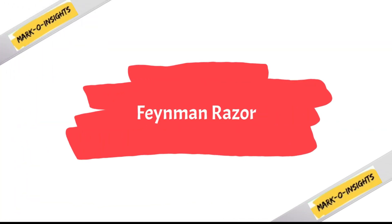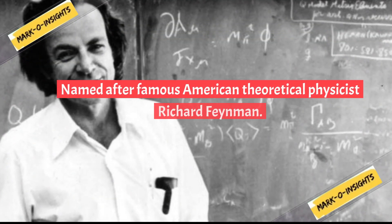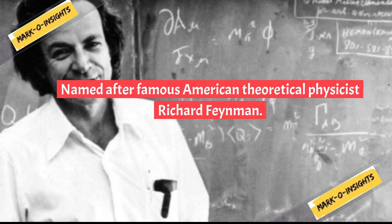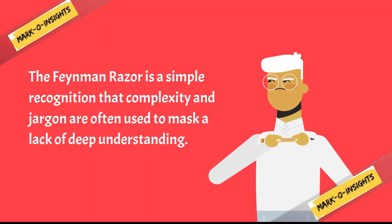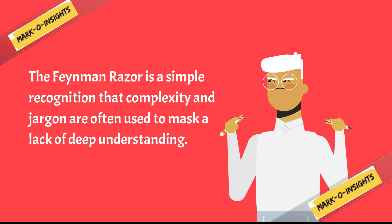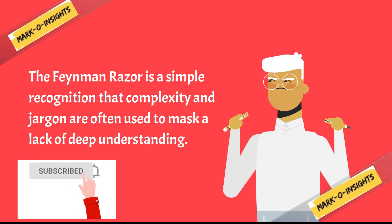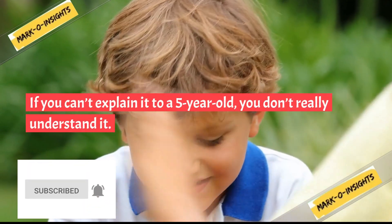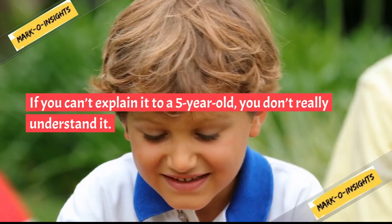Now let's learn about Feynman Razor. Named after famous American theoretical physicist Richard Feynman, the Feynman Razor is a simple recognition that complexity and jargon are often used to mask a lack of deep understanding. Simply put, if you can't explain it to a five-year-old, you don't really understand it.